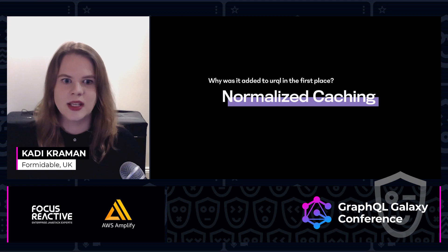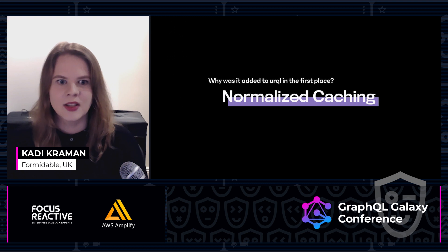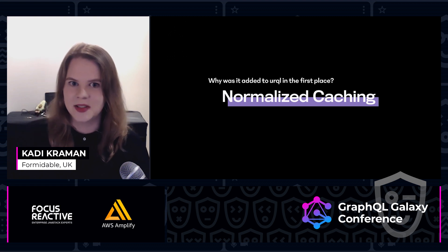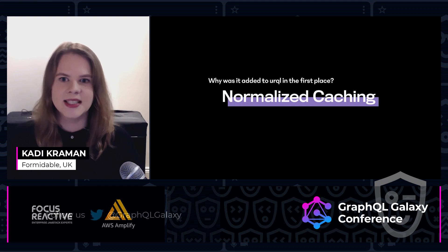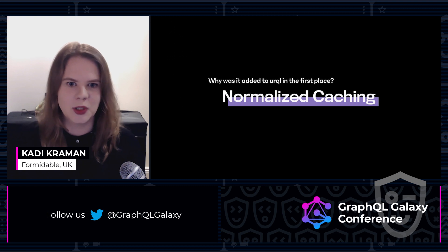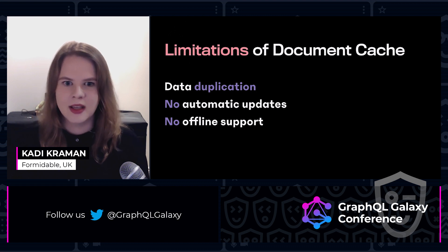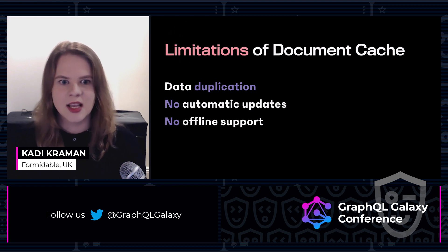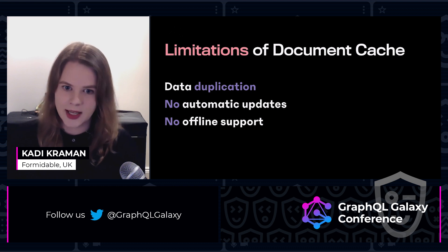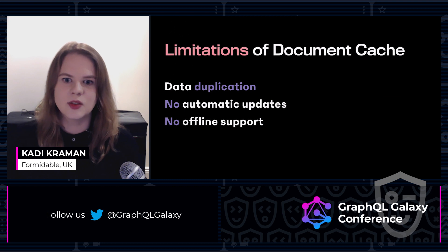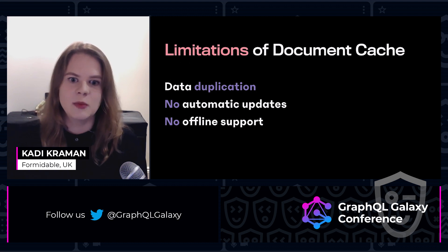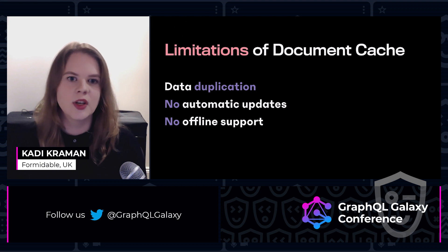This brings us to the alternate caching option for Urql: normalized caching. Document cache is straightforward and effective, but it has some limitations. As your application grows, it starts duplicating a lot of data — consider a paginated list with filter parameters; because the cache is keyed by the query and parameters, you'll end up storing the same items multiple times. With document cache, because we only use the type name for invalidation and not any kind of ID, there's no way to automatically reconcile the data. And if your application has any mutations, you won't be able to have offline support with document cache.